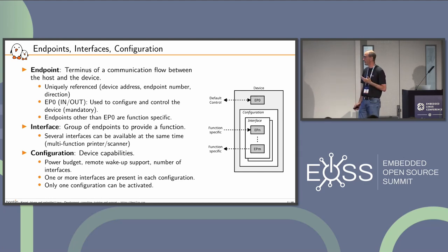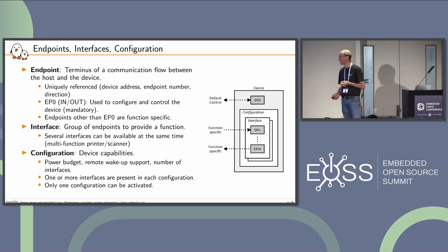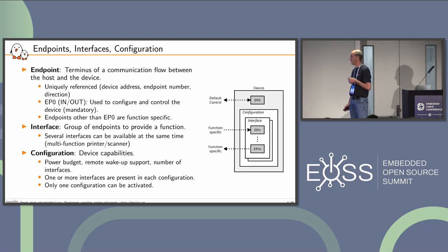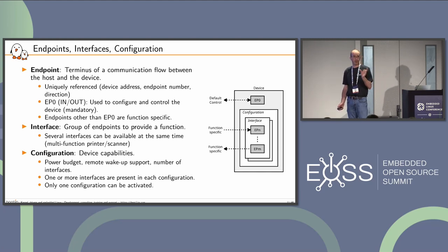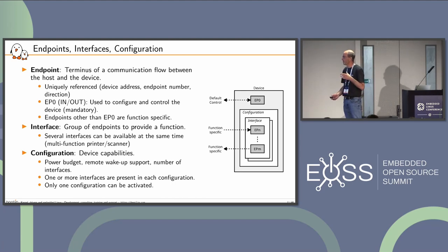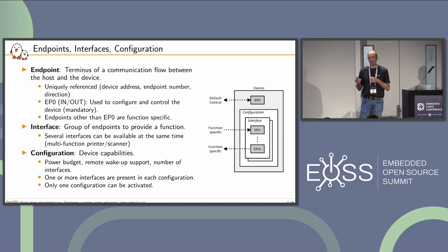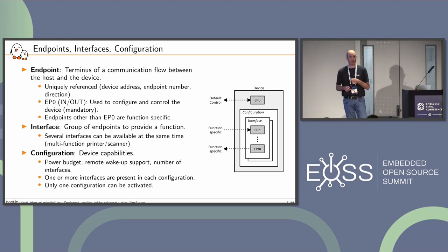We have the notion of an interface — simply a group of endpoints providing a function. We can have several interfaces available at the same time on a device; for instance, a multi-function device like a printer-scanner has one interface for the printer and another for the scanner. The configuration defines the device capabilities: power budget, remote wake-up support, and number of interfaces. Only one configuration can be activated at a time.